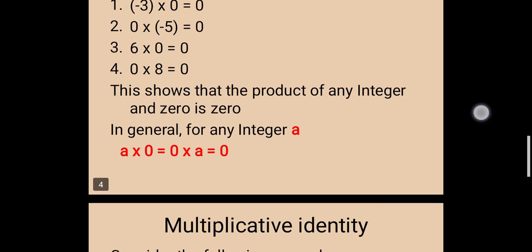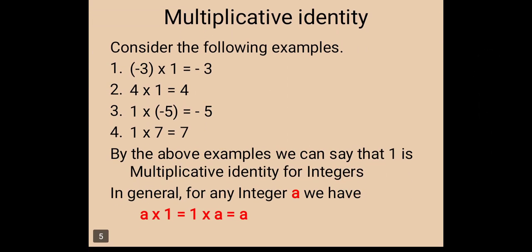The next property is multiplicative identity. Consider the following examples: minus 3 into 1 is equal to minus 3; 4 into 1 is equal to 4; 1 into minus 5 is equal to minus 5; 1 into 7 is equal to 7. By the above examples, we can say that 1 is the multiplicative identity for integers. In general, for any integer a, a into 1 is equal to 1 into a is equal to a.